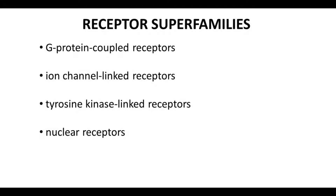The first superfamily is the G-protein-coupled receptors, or GPCRs. GPCRs are found in cell membranes. Ligands bind on the extracellular face, and the signal of ligand binding is communicated across the membrane so that the cell can make an appropriate response.